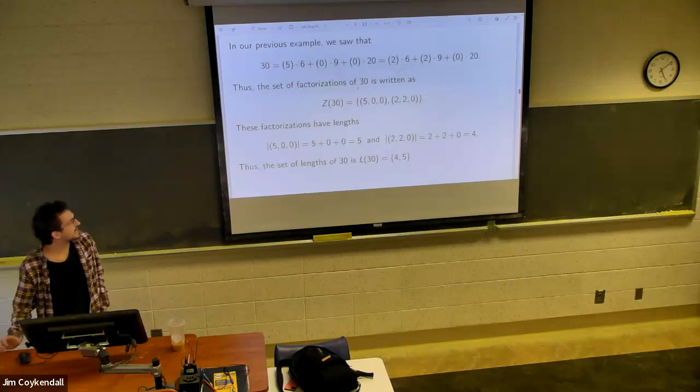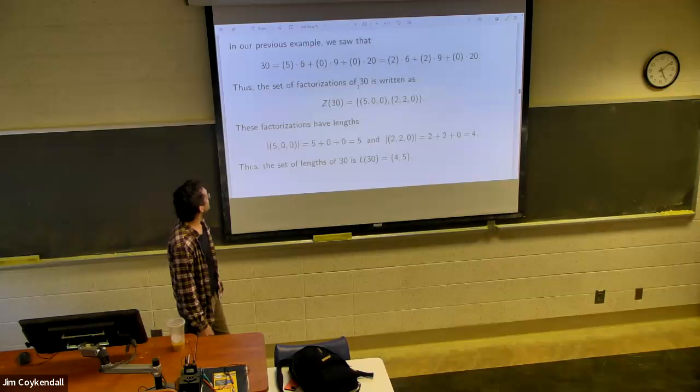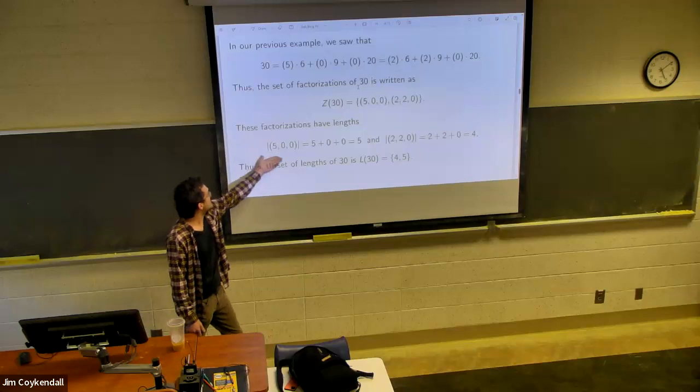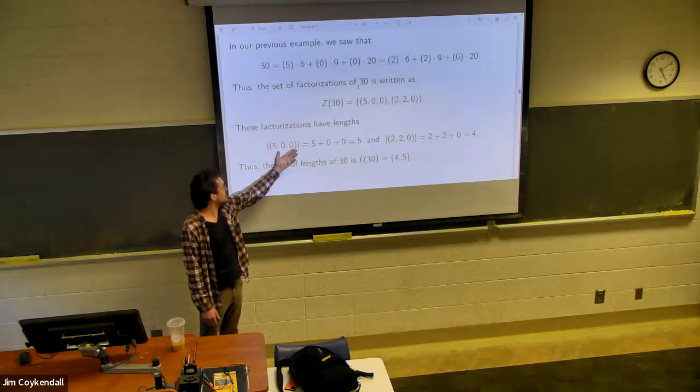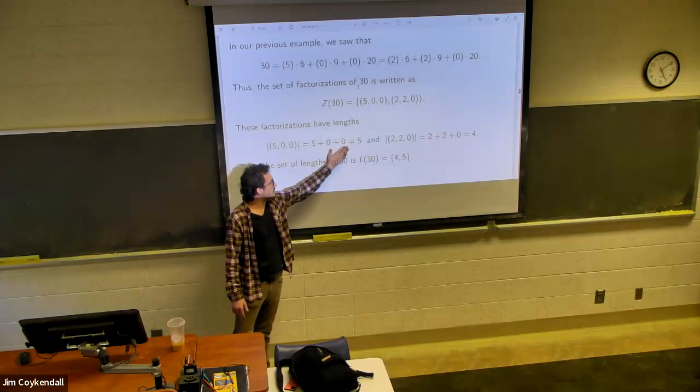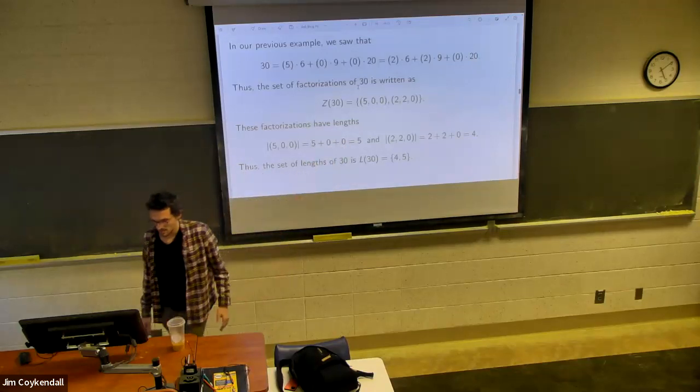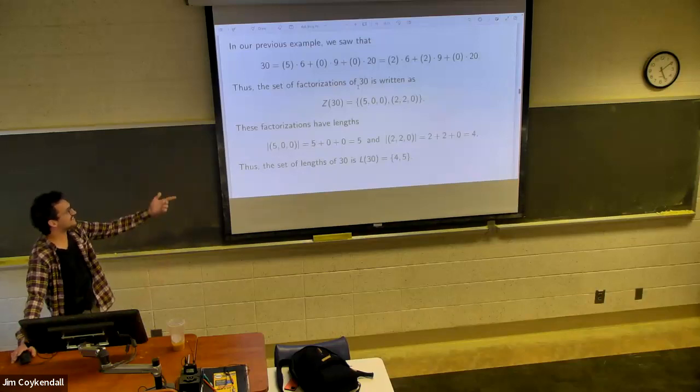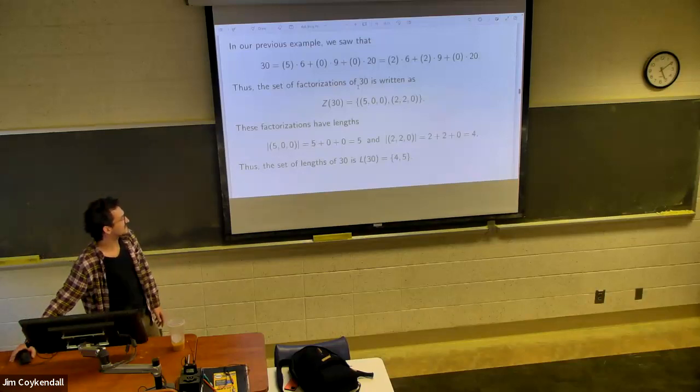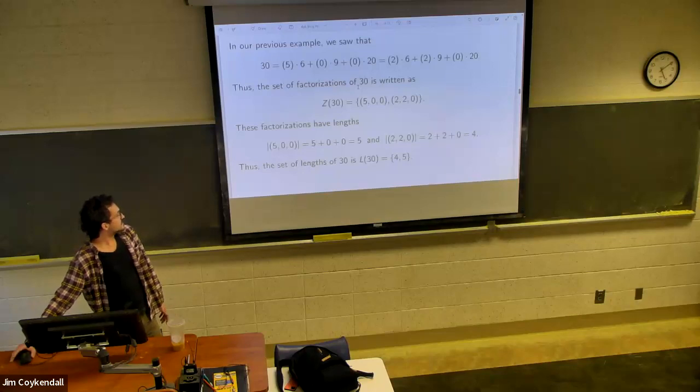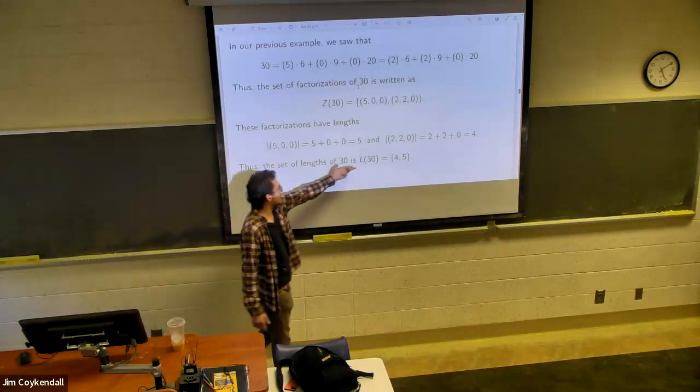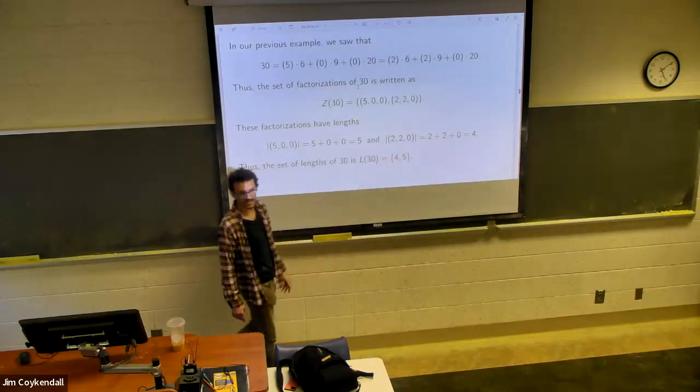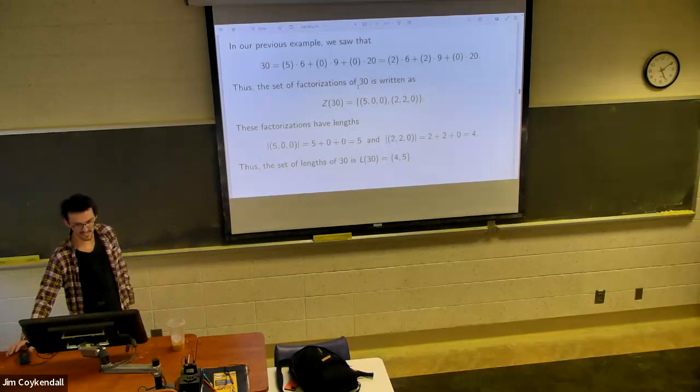So that's kind of why we do it. I think it's motivated by laziness, but, you know, we can all argue about that. So we do the lengths. It's just the sum of their coordinates. So five plus zero plus zero. Does anyone have a calculator? All right. So that's five, and two plus two is, of course, four. So then, the set of lengths of 30 is four and five, because we're just taking the lengths of each and throwing them in a set, calling it L of n, or L of 30 in this case.